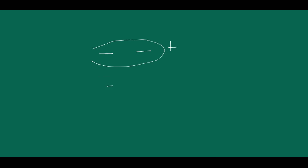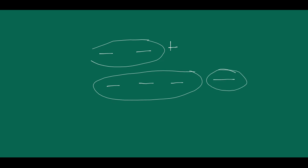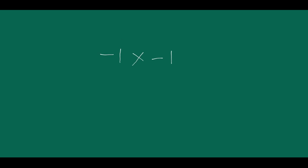आप देखो कि अगर minus को आप दो बार multiply करोगी, तो plus आएगा। अगर आप इसको तीन बार multiply करोगी, तो minus आएगा। क्यों? क्योंकि दो बार होगा तो plus, फिर plus और minus का multiply होगा, तो plus × minus = minus हो जाएगा।